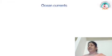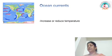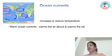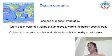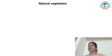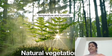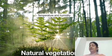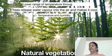Ocean currents are the movement of ocean water and can increase or reduce temperature. Warm ocean currents warm the air above them, which in turn warms the nearby coastal areas. Cold ocean currents cool the air above them, cooling the nearby coastal areas. The last factor is natural vegetation — temperature and humidity are the main factors that determine the extent of vegetation. Trees release water vapour into the air and make it cool, so forest areas have a lower range of temperature throughout the year.